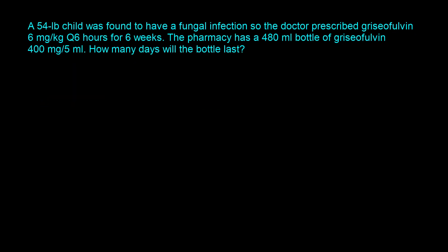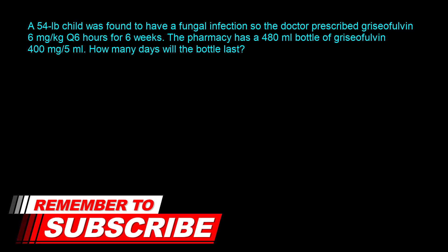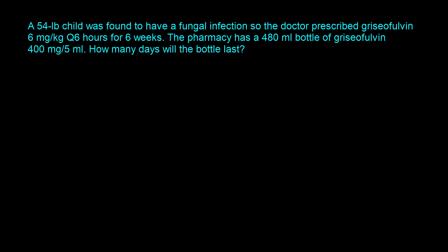Final example: a 54-pound child has a fungal infection. The doctor prescribed Griseofulvin 6 mg/kg every 6 hours for 6 weeks. The pharmacy has a 480 mL bottle of Griseofulvin 400 mg per 5 mL. How many days will the bottle last? The normalized dose is 6 mg/kg every 6 hours. First, convert 54 pounds to kilograms: divide by 2.2, giving 24.55 kilograms.